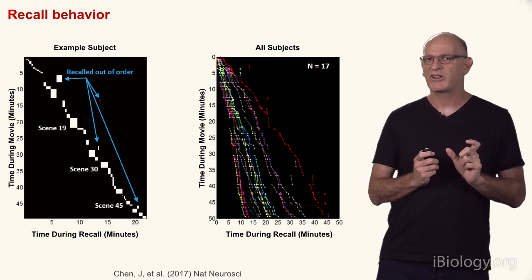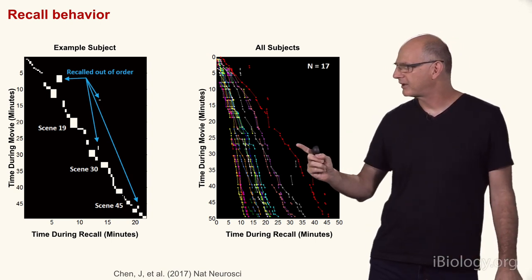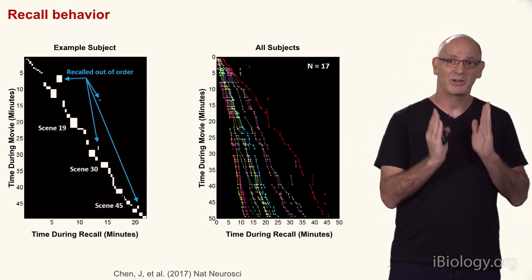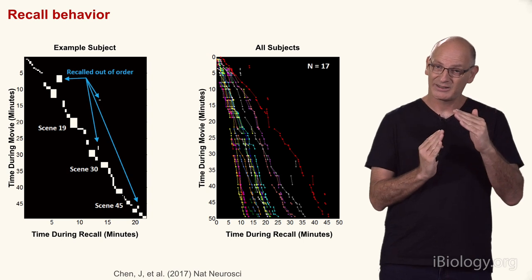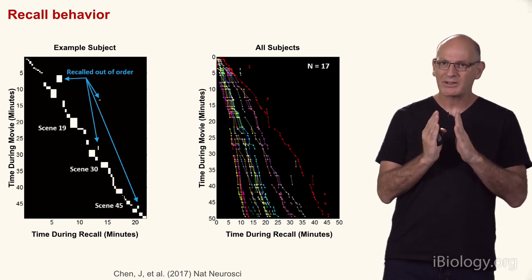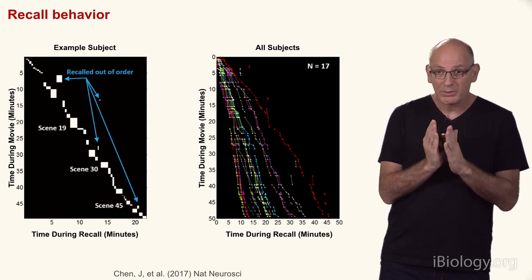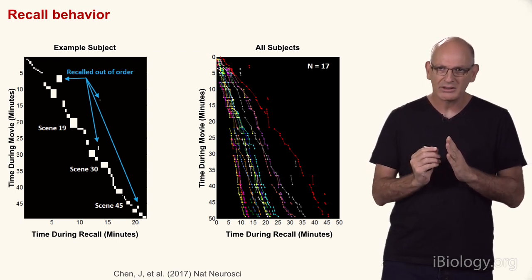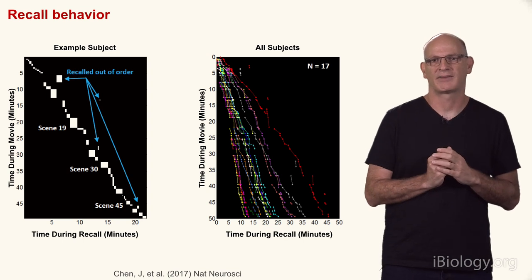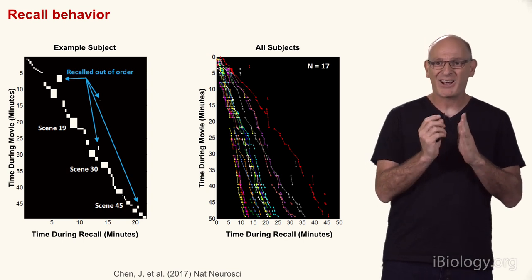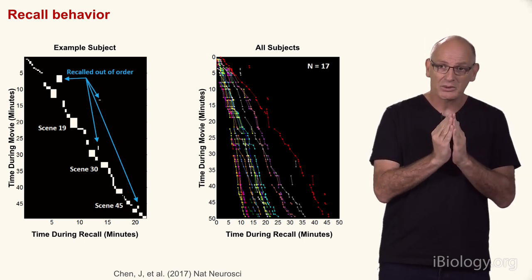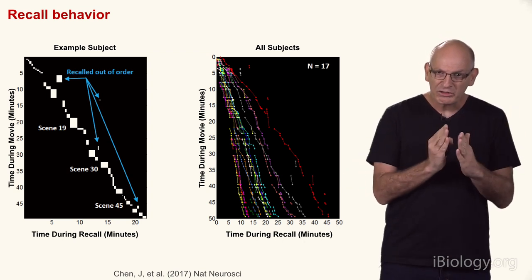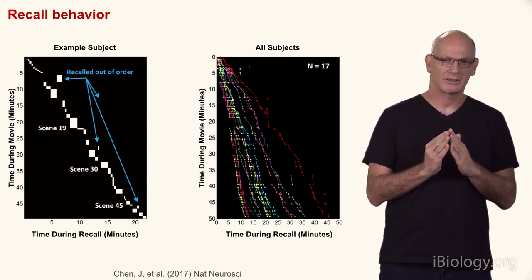This shows all 17 subjects who watched the movie and recalled it in the scanner. One subject took 45 minutes to describe a 50-minute movie — she is very detailed. But even the subjects who are less detailed and more compressing don't skip events; they tell all of them in order and in a precise way. In fact, those who tell it in a very short way might be even better storytellers, because they can really compress the movie and tell you only what's important.